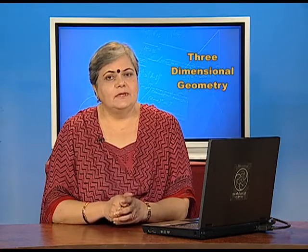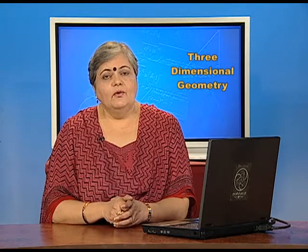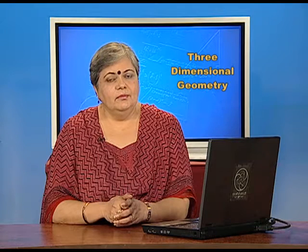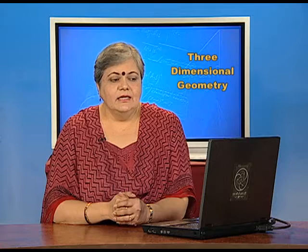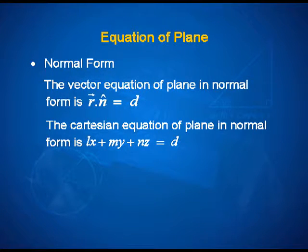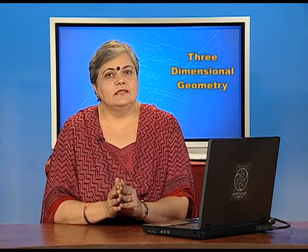We also learnt two very specific forms which we will continue to make use of. Let us take a quick review. The first form is called the normal form. The normal form uses the unit normal vector n-hat. We write it as r dot n-hat equal to d, where d is the perpendicular distance of the origin from the plane. In Cartesian, this equation takes the form Lx plus My plus Nz equal to d.